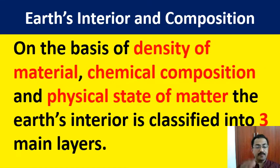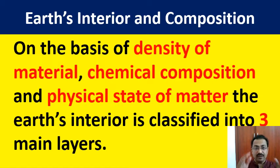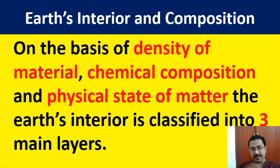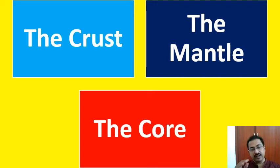On the basis of the density of material, chemical composition, and physical state of matter, the earth's interior is classified into three main layers. The first one is the crust, the second one is the mantle, and the third one is the core.